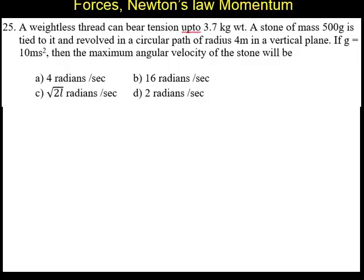Question number 25. A weightless thread can bear a tension up to 3.7 kilogram weight. A stone of mass 500 gram is tied to it and revolved in a circular path of radius 4 meter in a vertical plane. If g is equal to 10 meters per second square, then the maximum angular velocity of the stone will be.